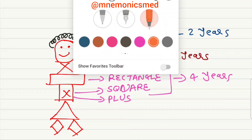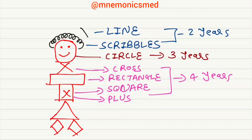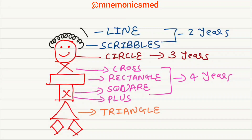Now using another color — children copy a triangle at the age of five years. You have to remember: children copy a triangle at the age of five years.